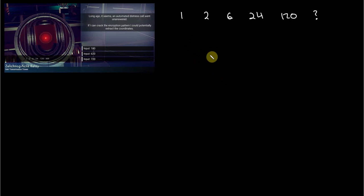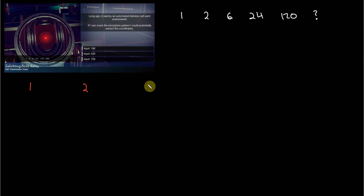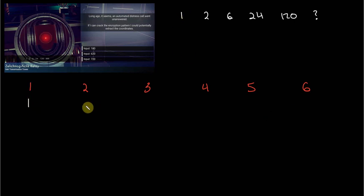Now, before I get to the answer — one may have been inclined to say, okay, we've got 1, 2, 6, 24, and 120. We have six terms total. The first term is 1, the second term is 2, the third term is 6, the fourth term is 24, the fifth term is 120, and the sixth term is unknown.